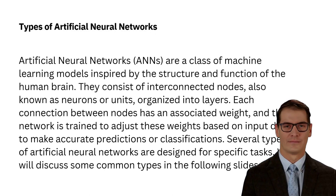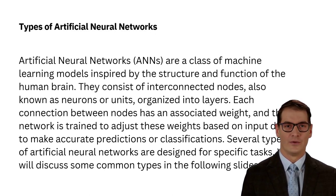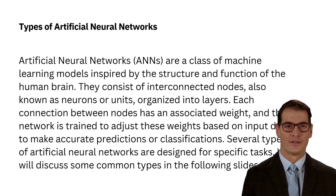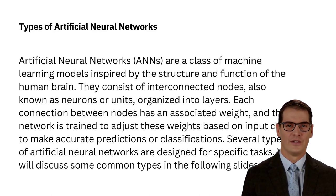Artificial neural networks, or ANNs, are a type of machine learning model that resemble the structure and function of the human brain. They consist of interconnected nodes, or neurons, that are organized into layers.